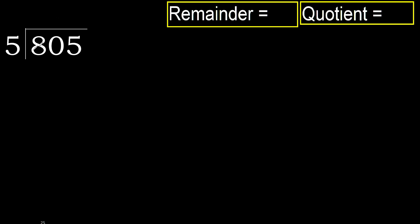805 divided by 5. 8 is not less, therefore with 5. 5 multiplied by which number is nearest to 8, but not greater? 5 multiplied by 2 is 10, and 10 is greater.